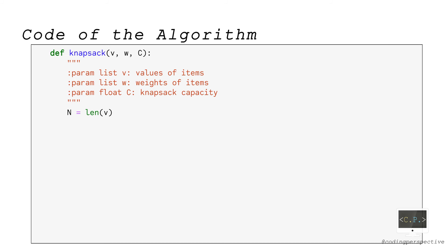First, we compute the number of items, capital N. Then in the first step, we initialize the value functions m(0,c) to 0 for each c.